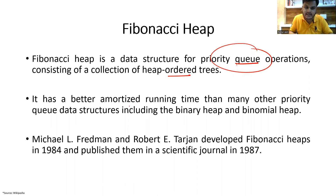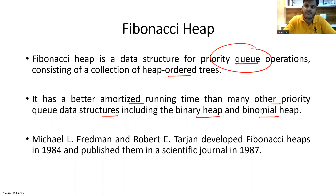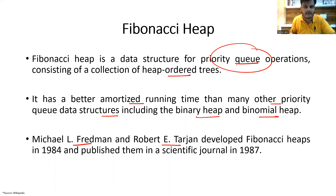Fibonacci heap has a better amortized running time than many other priority queue data structures, including the binary heap and binomial heap. The running time complexity is much more improved and boosted in Fibonacci heap. Michael L. Fredman and Robert E. Tarjan developed Fibonacci heap in 1984 and published it in a scientific journal in 1987.